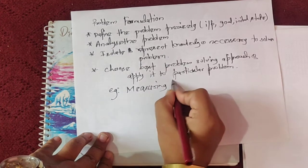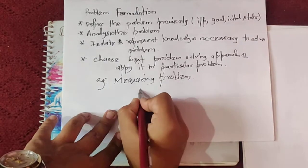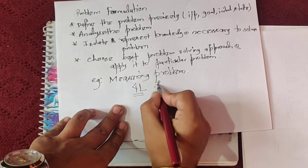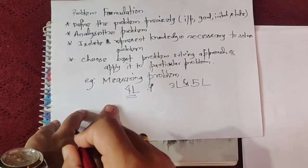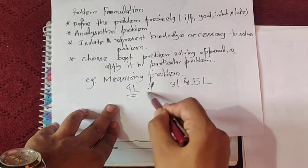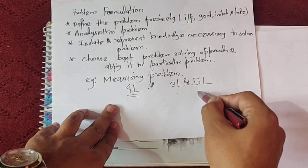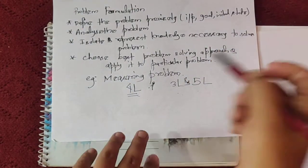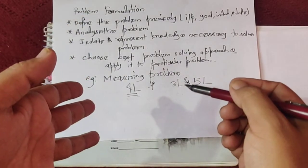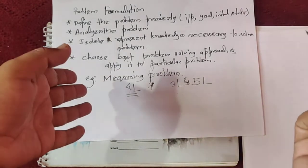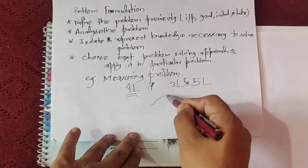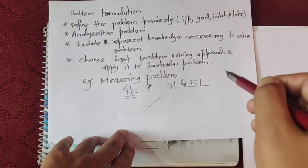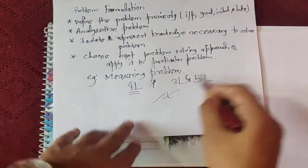Let us consider the measuring problem as an example. We have to measure four liters by using a three-liter and a five-liter jug. We know how to solve this using simple mathematics, but how do we solve it in artificial intelligence using problem-solving techniques? A detailed solution is given in a separate video on this topic.